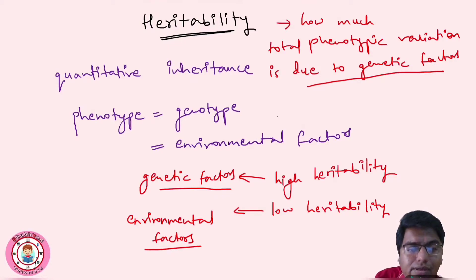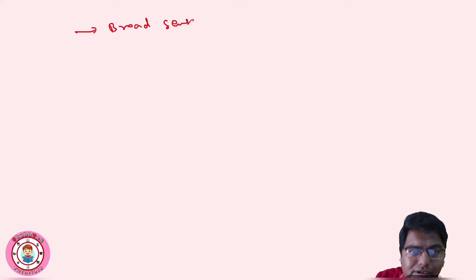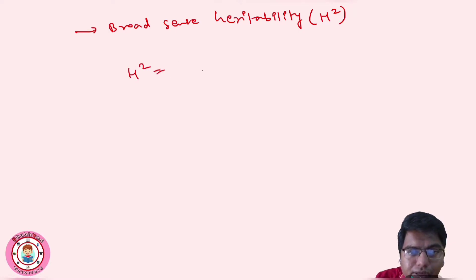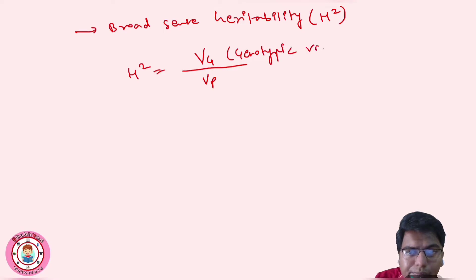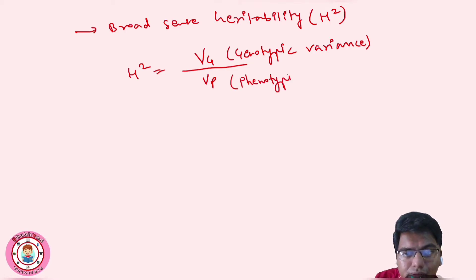Heritability is of two types. First, broad sense heritability. This is the ratio of Vg upon Vp, where Vg is genotypic variance and Vp is phenotypic variance. Variance means variation only.